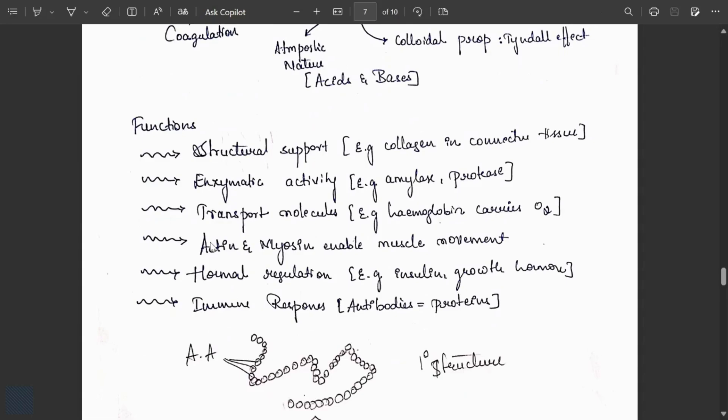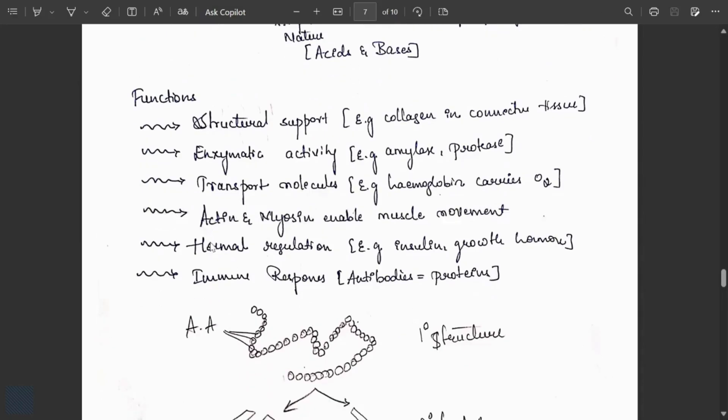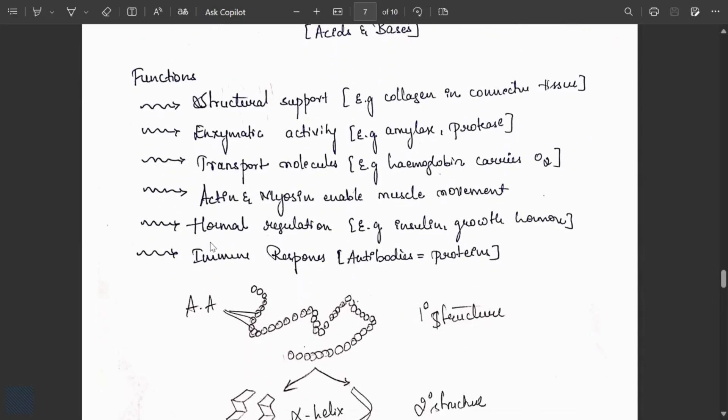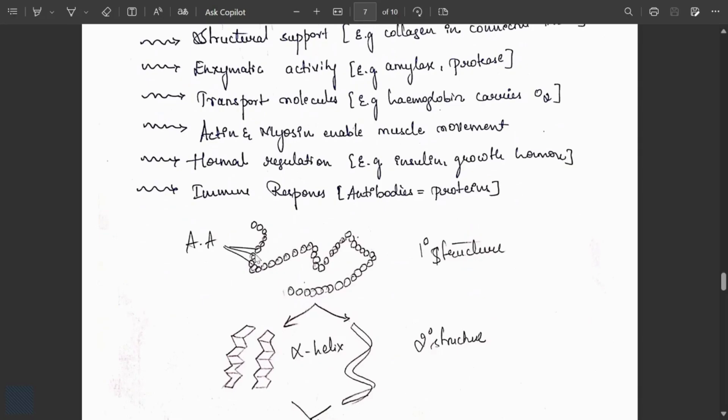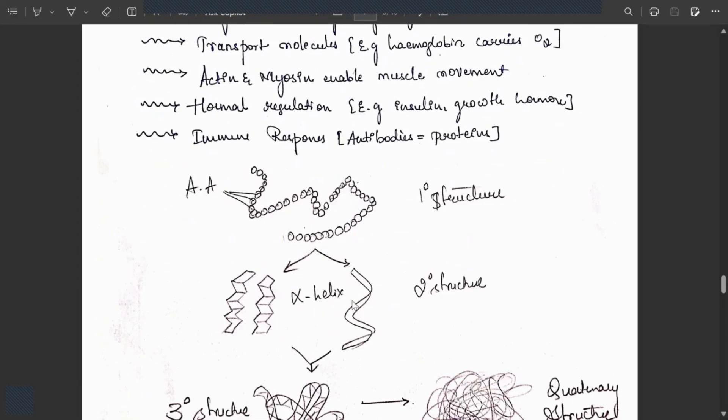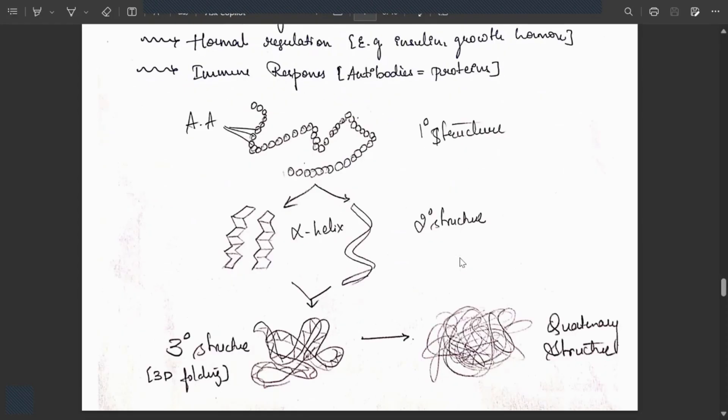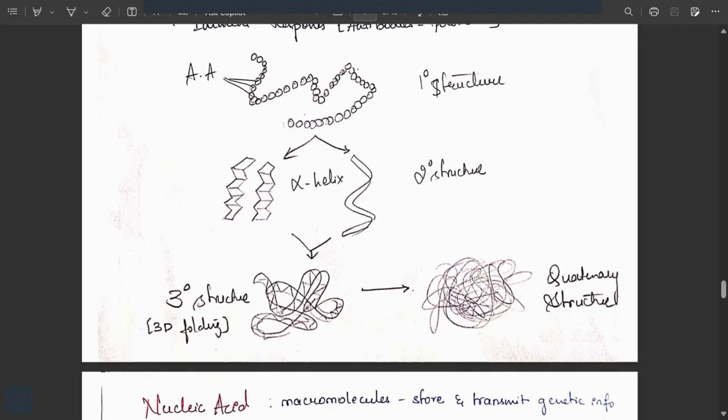Protein structure: primary structure shows amino acids forming alpha helix, the secondary structure with alpha and beta sheets. Then tertiary structure with 3D folding and quaternary structure.